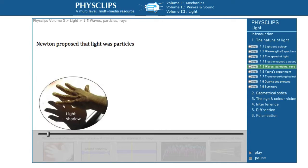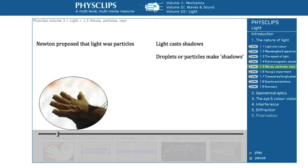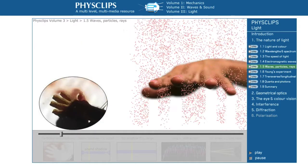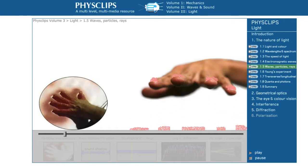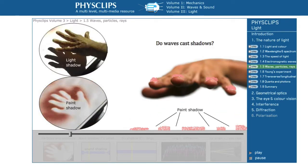In light, my hand casts a shadow. That's also what we'd expect of particles. So light shares that property with particles. Do waves cast a shadow?